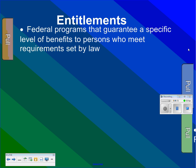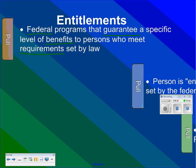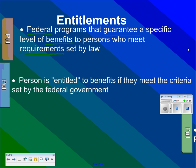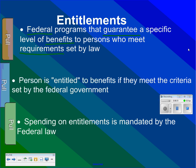An entitlement is a guaranteed federal benefit for all people who meet the legal requirements. For example, Social Security: if you are 67 years old, the federal government is guaranteed to pay you money. Medicare: if you reach age 65, you are entitled to Medicare benefits. Spending on entitlements is mandated by federal law — Congress cannot simply choose not to pay it. They would have to pass a new law to stop payment, which would likely be filibustered.